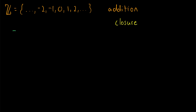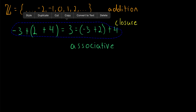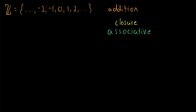The next thing I want you to notice — suppose we have three integers like negative three, two, and four. We could put two and four in parentheses so they're added together first: two plus four is six, plus negative three equals positive three. As it turns out, this is the same result we get if we put negative three and two in parentheses instead: negative three plus two is negative one, plus four, which is again positive three. This is true for any three integers. This is called the property of associativity, and the integers are associative under addition. This is the second group axiom.